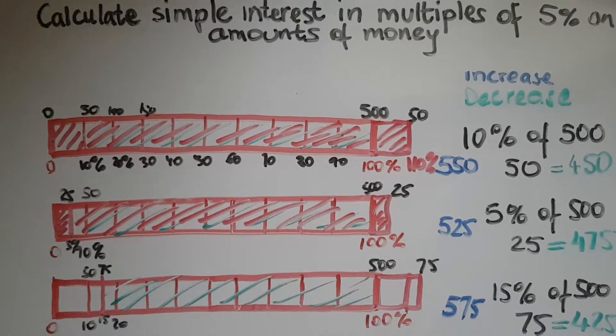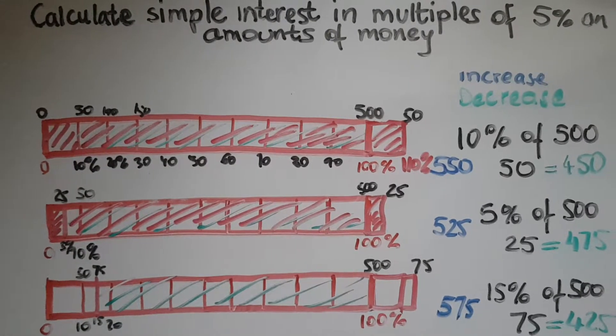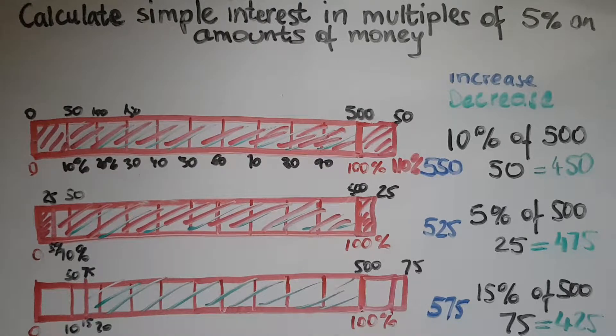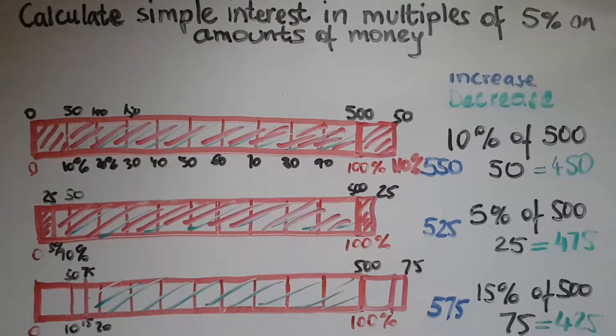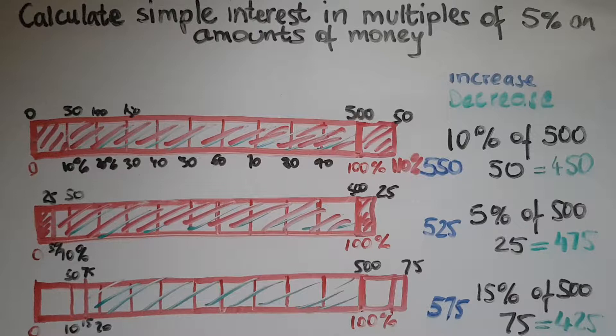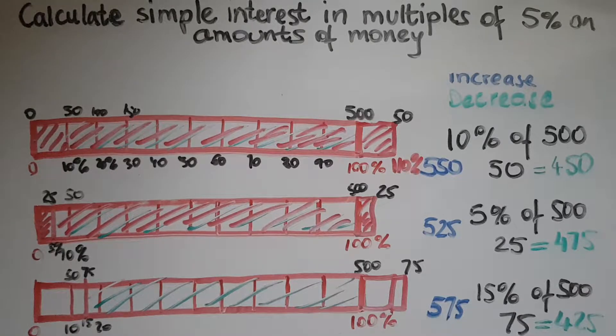In this video we'll learn to calculate simple interest in multiples of 5% on amounts of money. We've looked at percentage increase and decrease before, and this is really connected to simple interest.